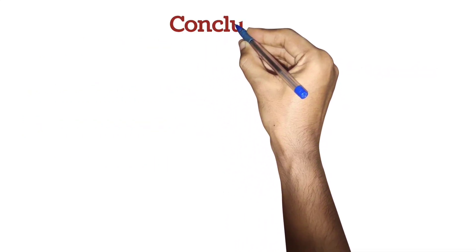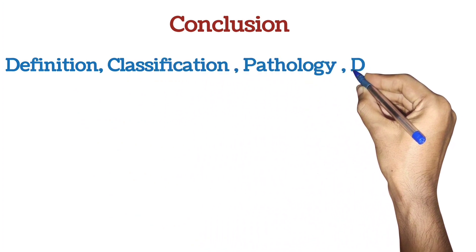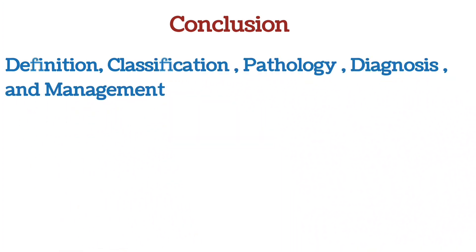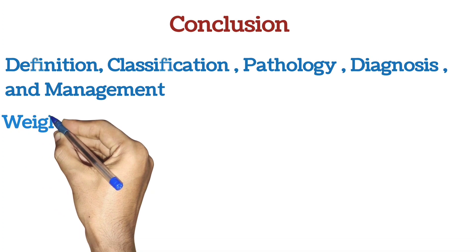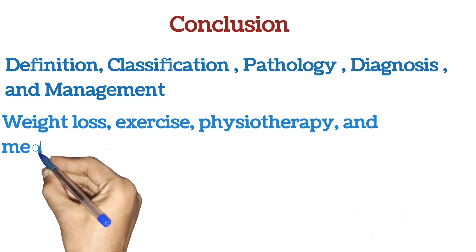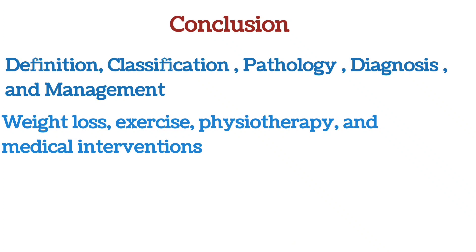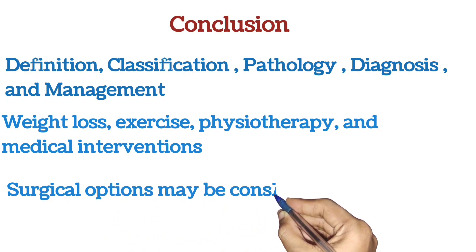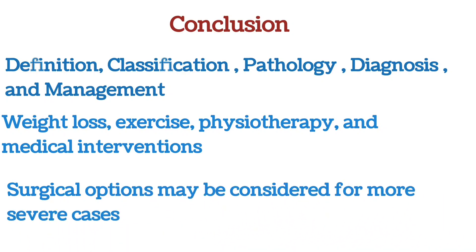Conclusion: Osteoarthritis of the knee is a prevalent condition that can significantly impact a person's daily life. Understanding its definition, classification, pathology, diagnosis, and management is crucial for those affected and those seeking to support them. By implementing appropriate measures such as weight loss, exercise, physiotherapy, and medical interventions, individuals can effectively manage their symptoms and improve their quality of life. Surgical options may be considered for more severe cases. Taking proactive steps to maintain knee health — such as adopting a healthy lifestyle and using assistive devices when necessary — can help prevent or manage knee OA effectively.